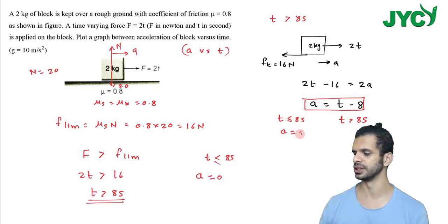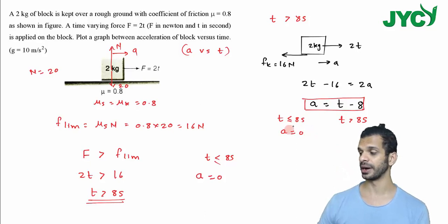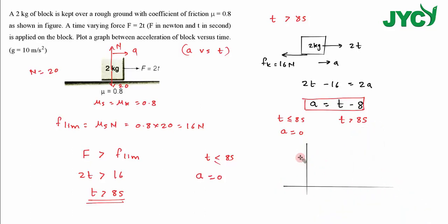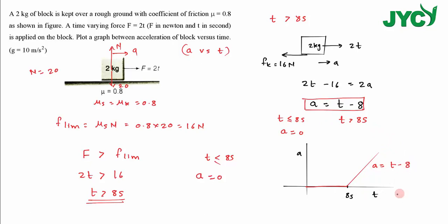When time is less than 8 seconds, acceleration is 0. If we plot the acceleration-time graph using these two equations: the acceleration is along the y-axis and time along the x-axis. Till t equals 8 seconds, acceleration is 0. After 8 seconds, the equation a equals t minus 8 gives a straight line. This is the acceleration-time graph.